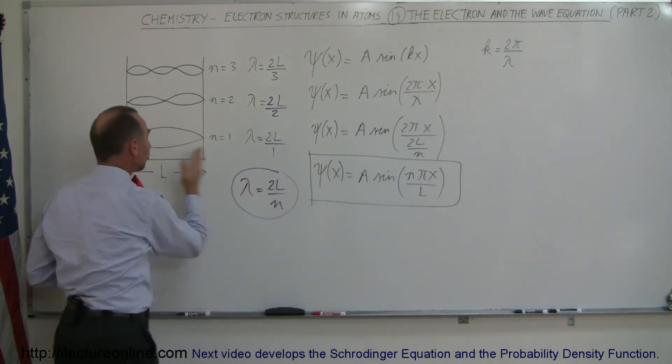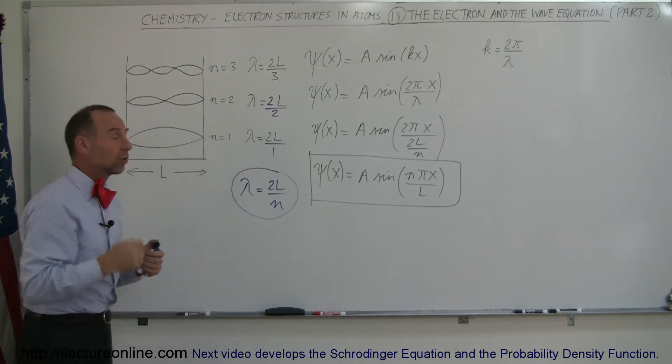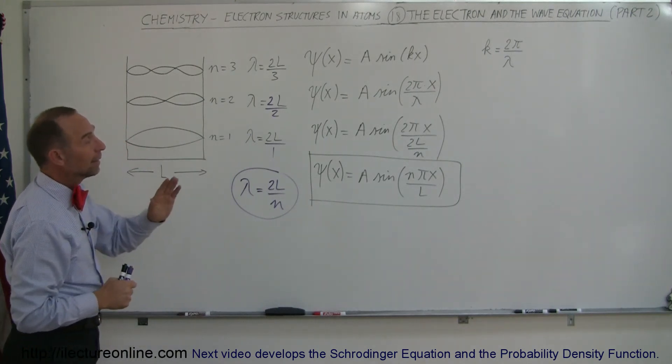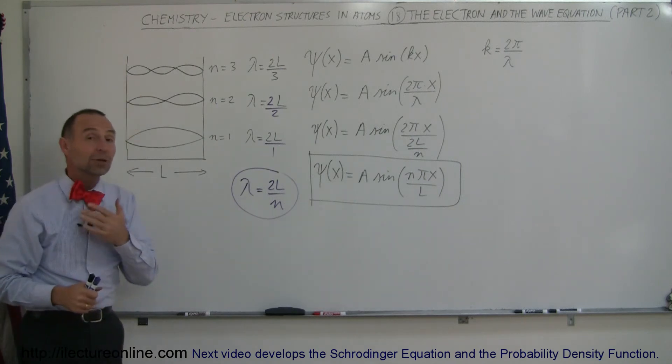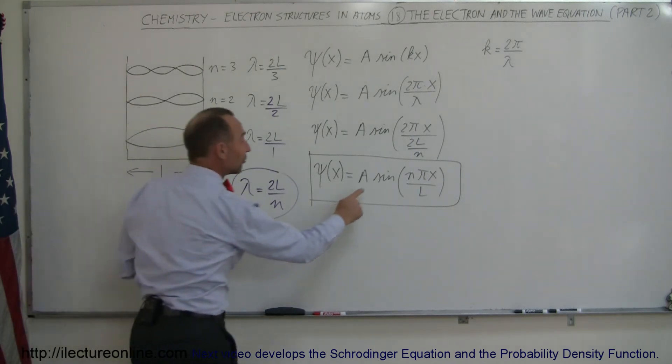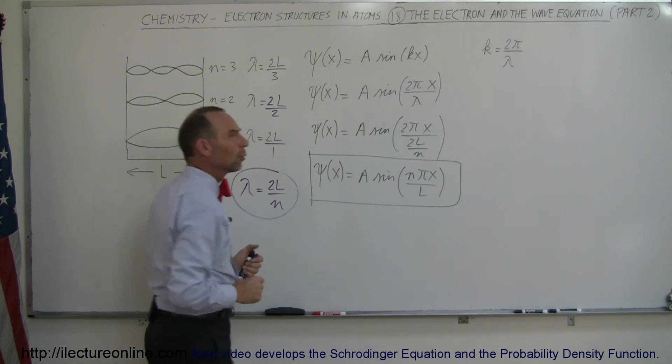x, which is the position in the x direction where the electron will be, and then of course n would be the energy state. The only thing we don't know yet is the value for A. What is the amplitude of the wave?